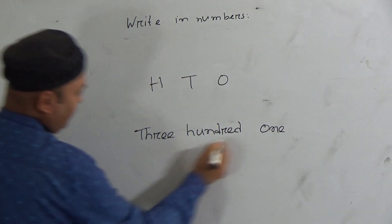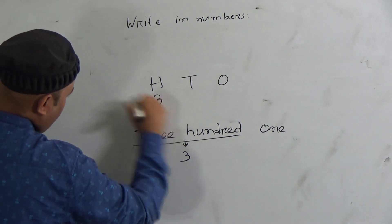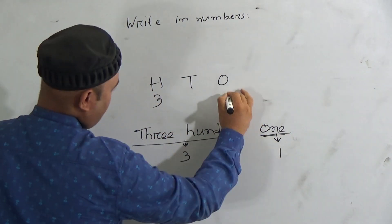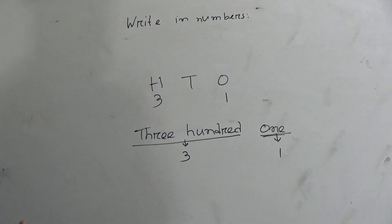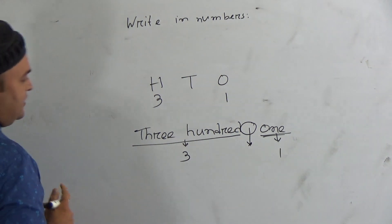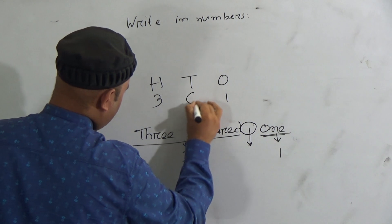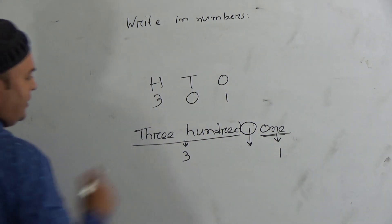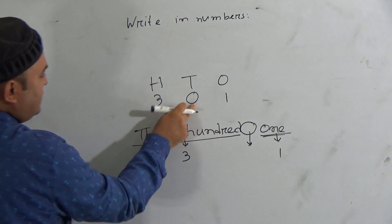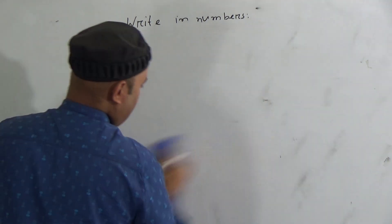Now if I write 301, how many hundreds are here? Here is 300, so you have to write 3 in hundred place. The last digit is 1, so 1 will be in ones place. But look here, here is the blank space of tens place. So in the blank space of tens place we have to use 0. If there is no tens, then you have to use 0. Hope you understood this one.